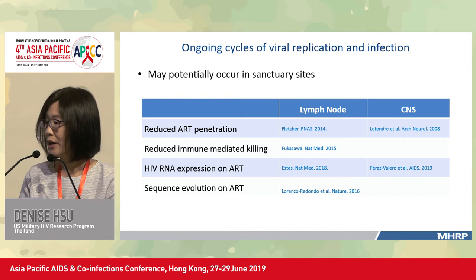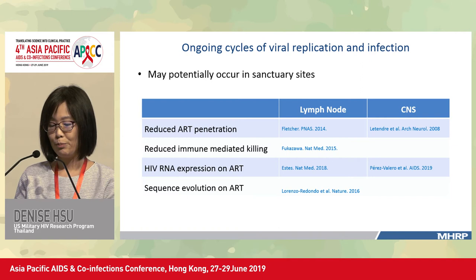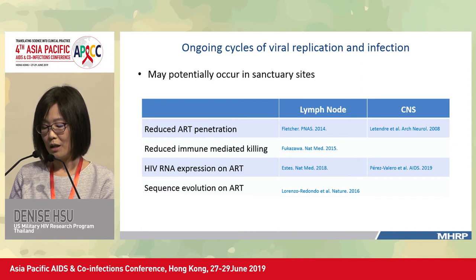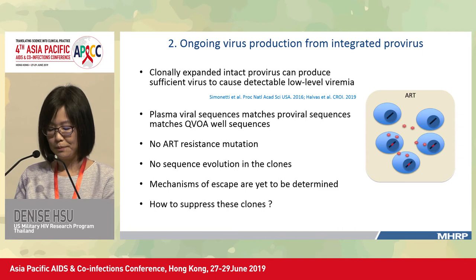In the lymph node follicular area there is reduced immune-mediated killing. In both the lymph node and CNS we can find HIV RNA expression despite suppressive ART in peripheral blood, and there is evidence of sequence evolution on ART. So it may be possible that there is ongoing viral replication in sanctuary sites, but we don't see much evidence of that reflected in the peripheral blood.